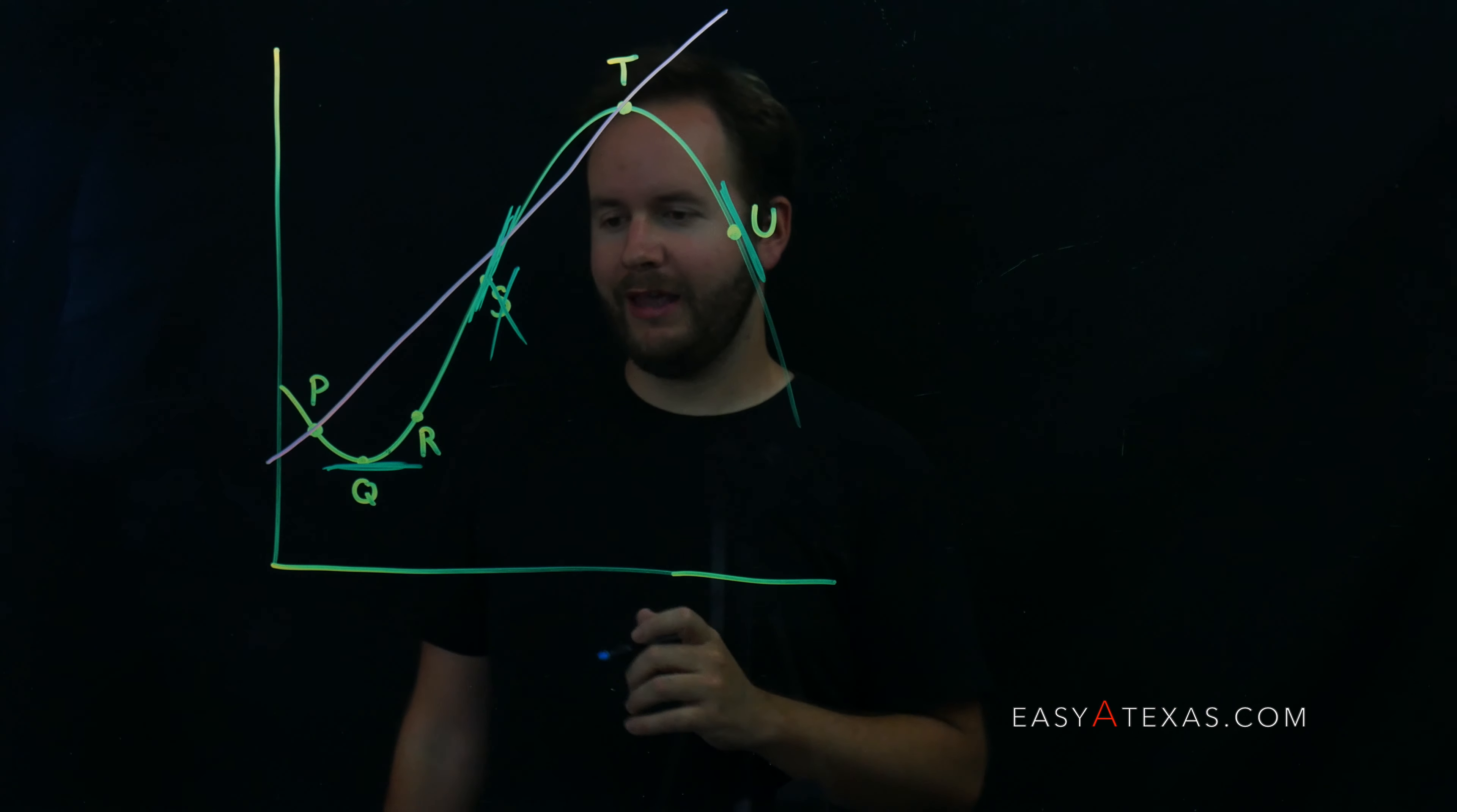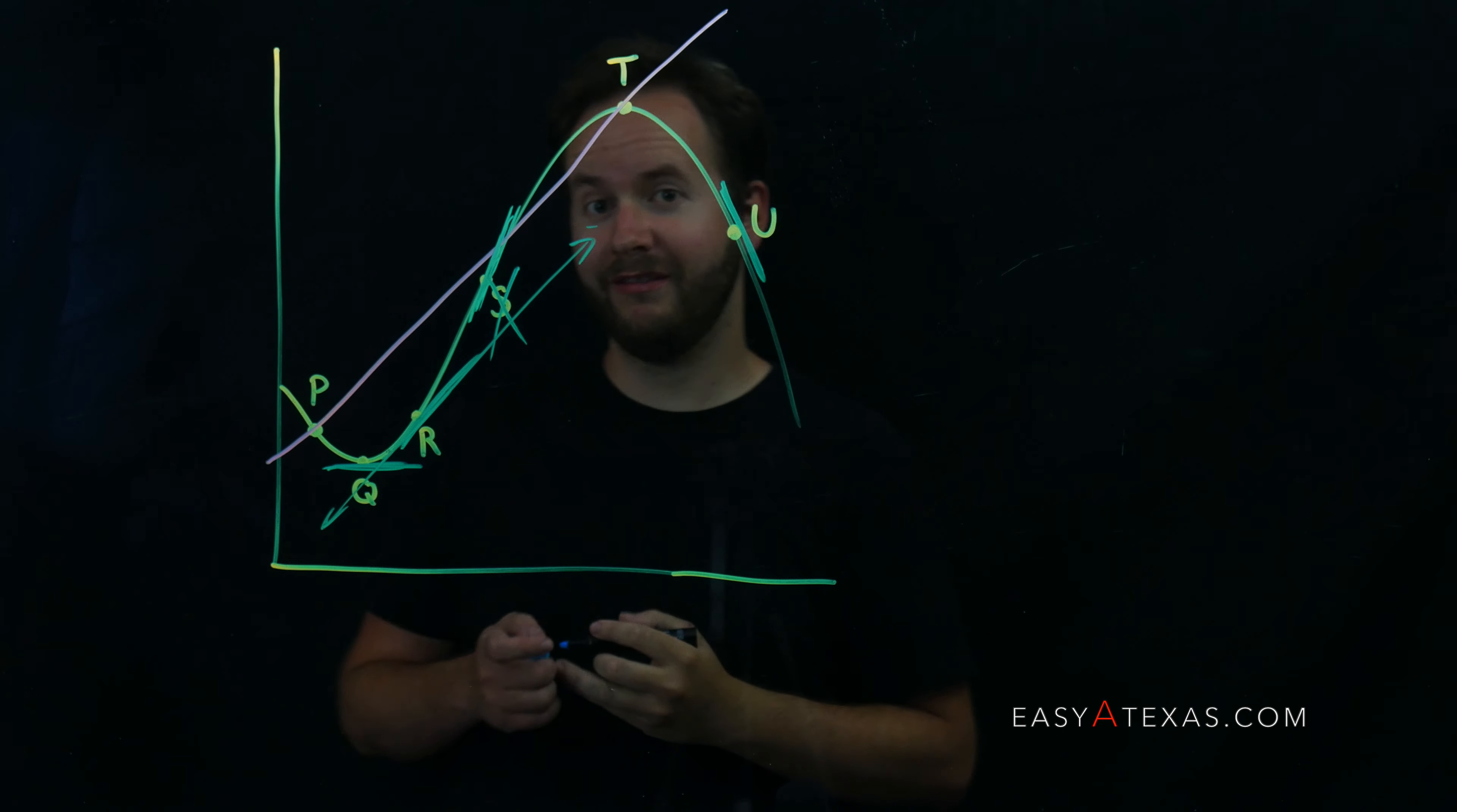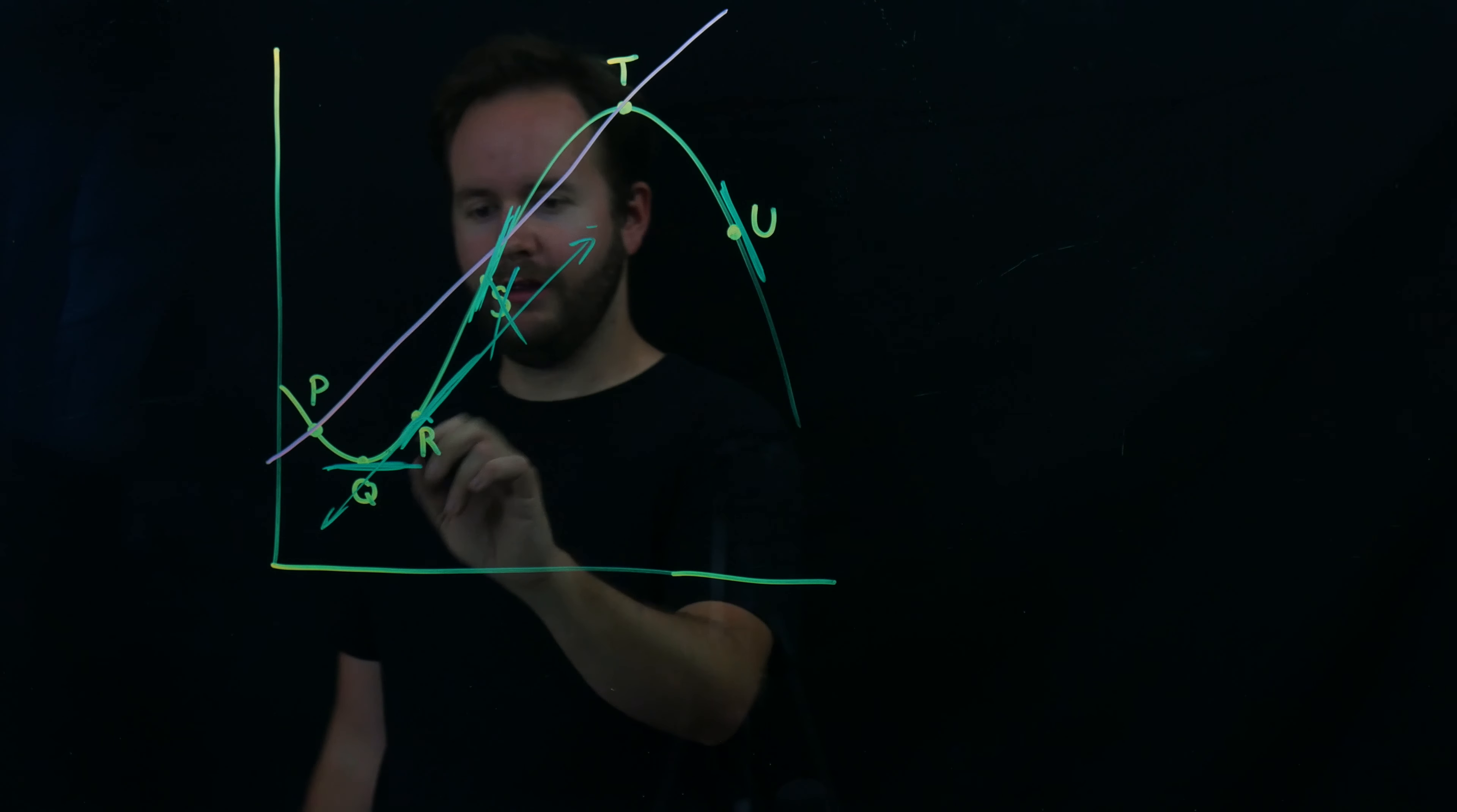R is our last remaining candidate. If you draw a tangent line, of course it's not really perfect. Again, it doesn't have to be perfect. If you draw a tangent line here, this blue tangent line looks to be roughly parallel to the pink secant line we've drawn, so our answer has to be R.